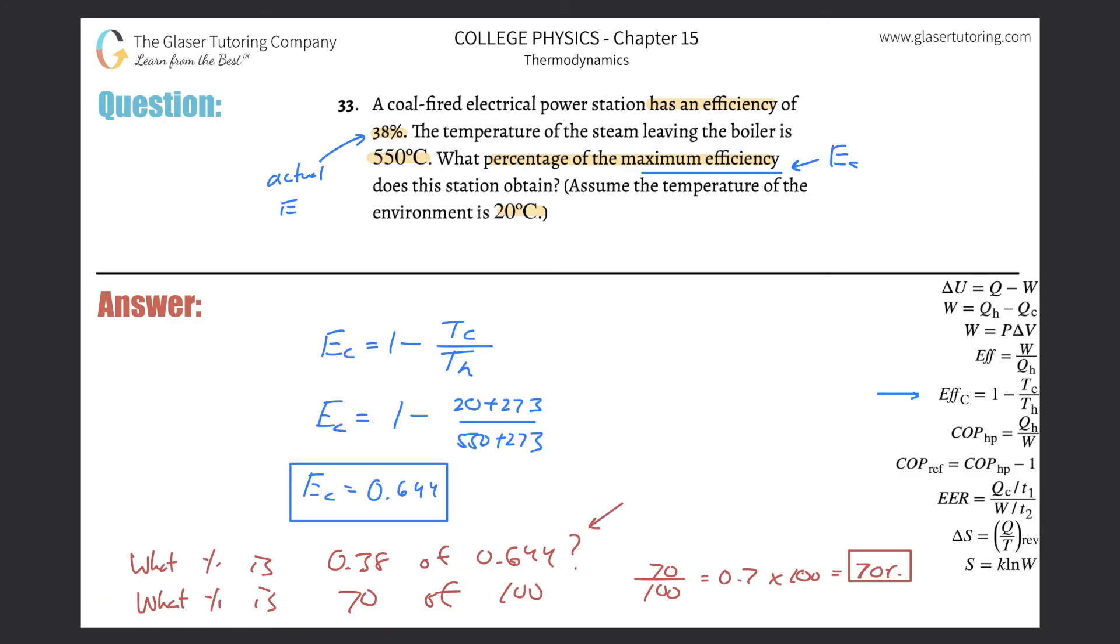So then this is going to be the same exact way I did the one on the bottom. 0.38 divided by then 0.64, oops, 0.644. And then if you wanted to convert that into a percent, you can. I'm just going to do the decimal. So 0.38 divided by 0.644. I'm going to actually use the exact value at the top. So I get about 0.590. So about 59%.